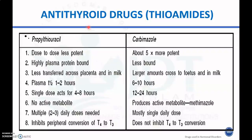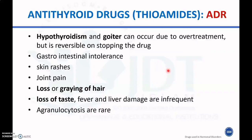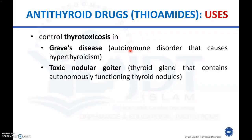Adverse drug reactions of anti-thyroid drugs include hypothyroidism and goiter due to inhibition of hormonal synthesis, gastrointestinal intolerance, skin rashes, joint pain, loss or graying of hair, loss of taste, fever, and liver damage. Agranulocytosis is a serious but infrequent adverse reaction. These drugs are mainly used to control thyrotoxicosis in Graves' disease as well as toxic nodular goiter.